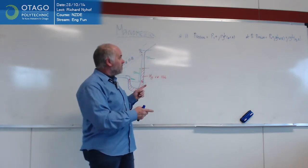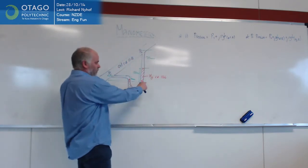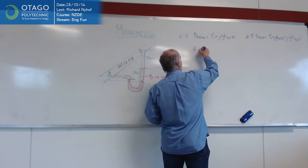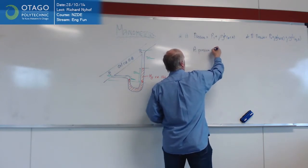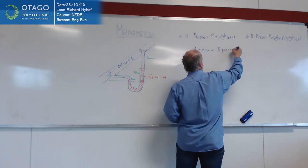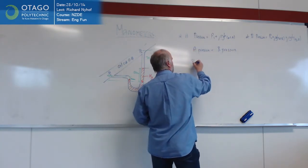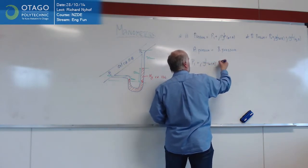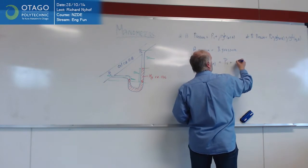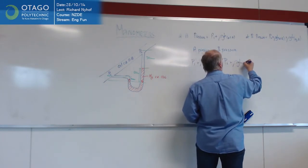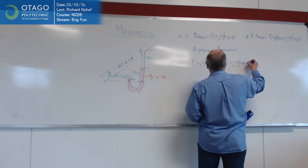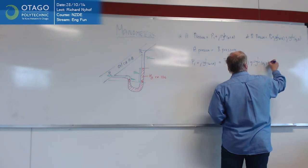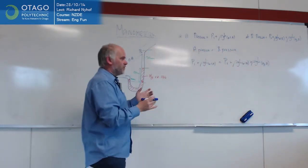And we know that those two things are equal, because they're on a shared well and at the same level on a shared well. So A pressure equals B pressure. So P1 plus ρgh of oil at point A equals P2 plus ρgh of oil at point B, plus ρgh of mercury at point B. Because those two things are the same.